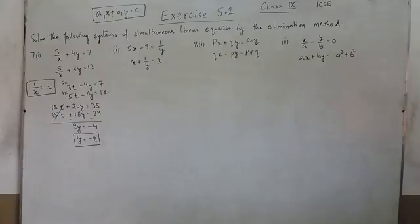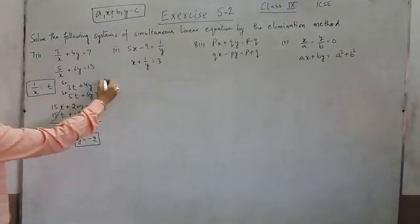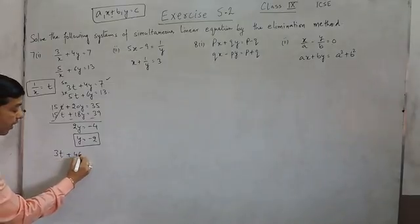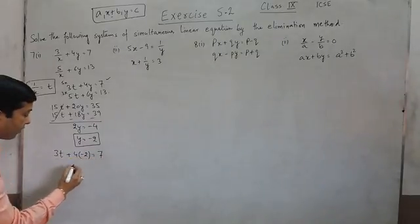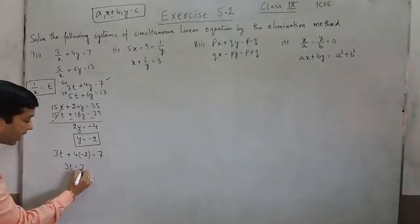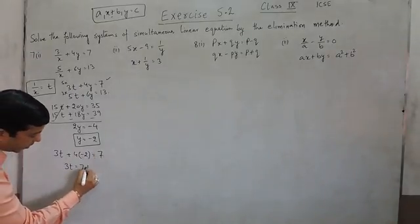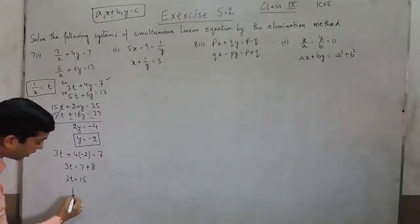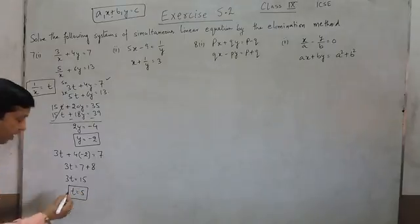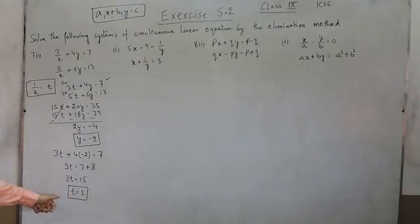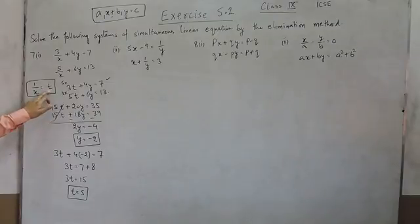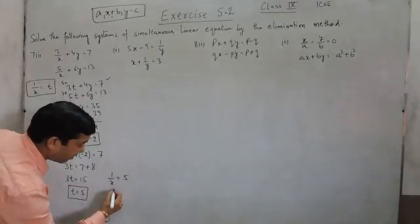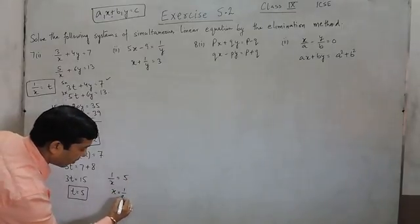As we have found the value of y as minus 2, I am putting it in the simplified form of the equation. It is 3t plus 4 into y, that is minus 2, is equal to 7. So 3t will become 7; this minus 8 when moved to the right-hand side becomes plus 8. So 3t becomes 15 and the value of t becomes 5. As the value of t has come out to be 5, and 1 upon x is already t, so 1 upon x is equal to 5 and the value of x becomes 1 upon 5.